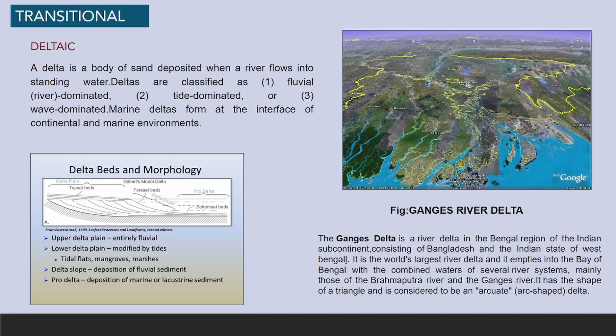Now let's study transitional sedimentary depositional environments. A delta is a body of sand deposited when a river flows into standing water. Deltas are classified as fluvial (river-dominated), tide-dominated, or wave-dominated. Marine deltas form at the interface of continental and marine environments. The Ganges delta is a river delta in the Bengal region of the Indian subcontinent, consisting of Bangladesh and the Indian state of West Bengal.